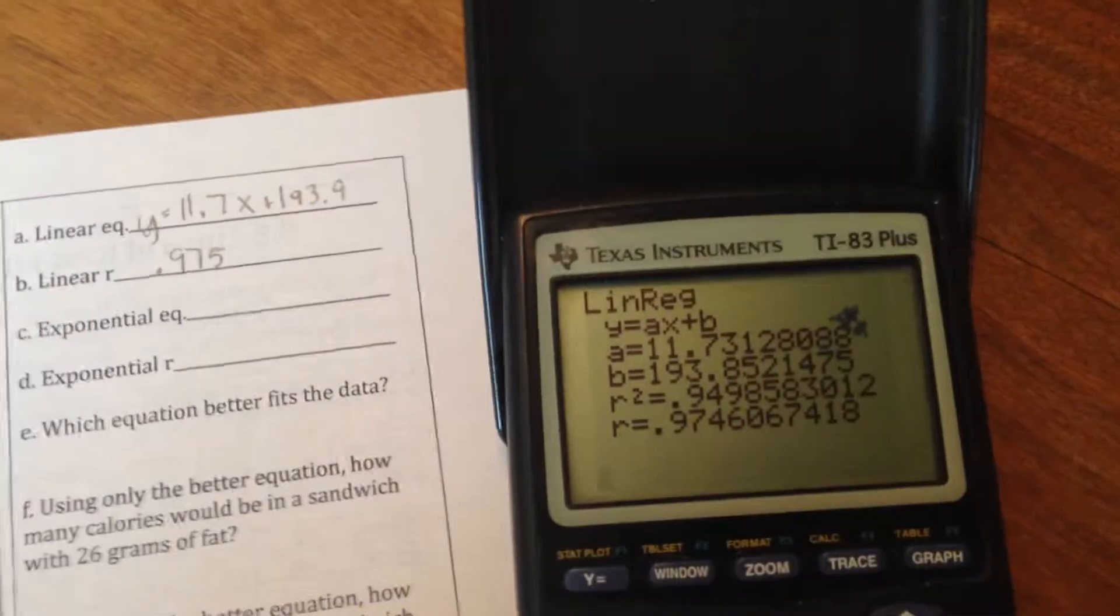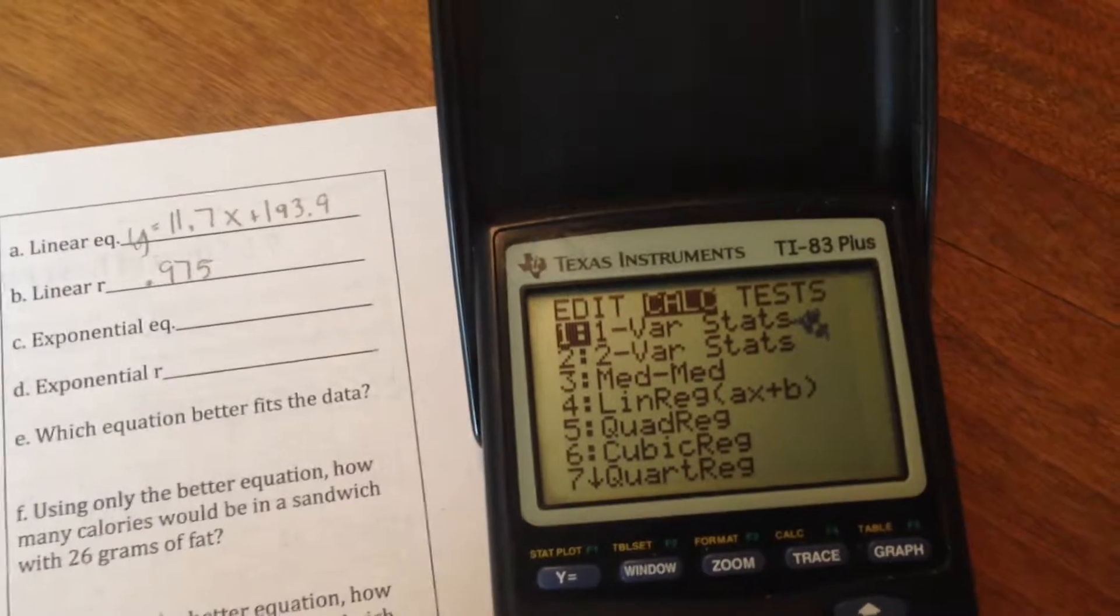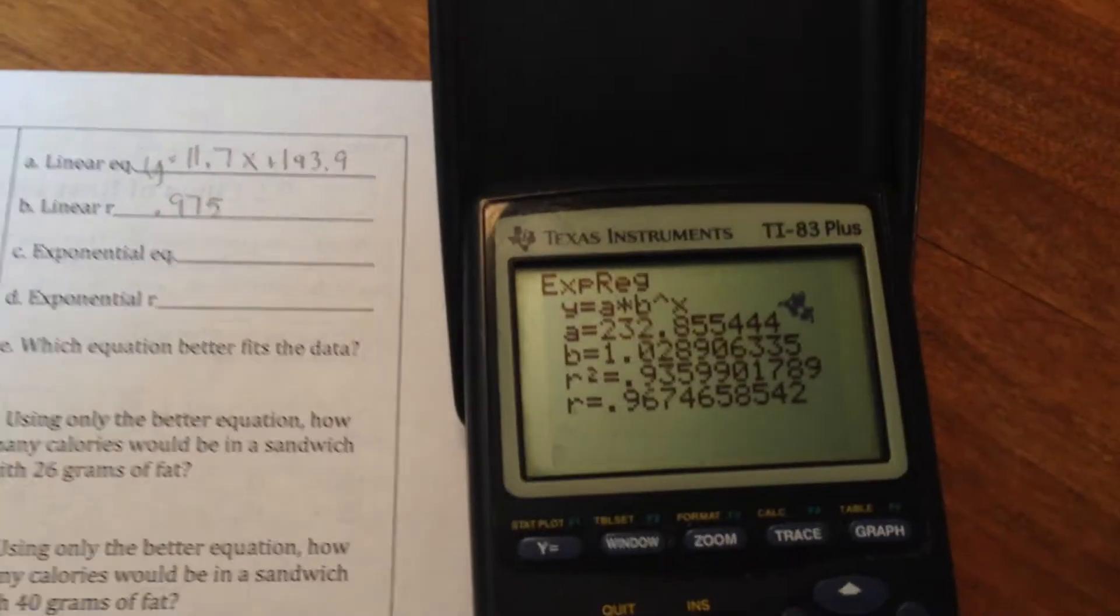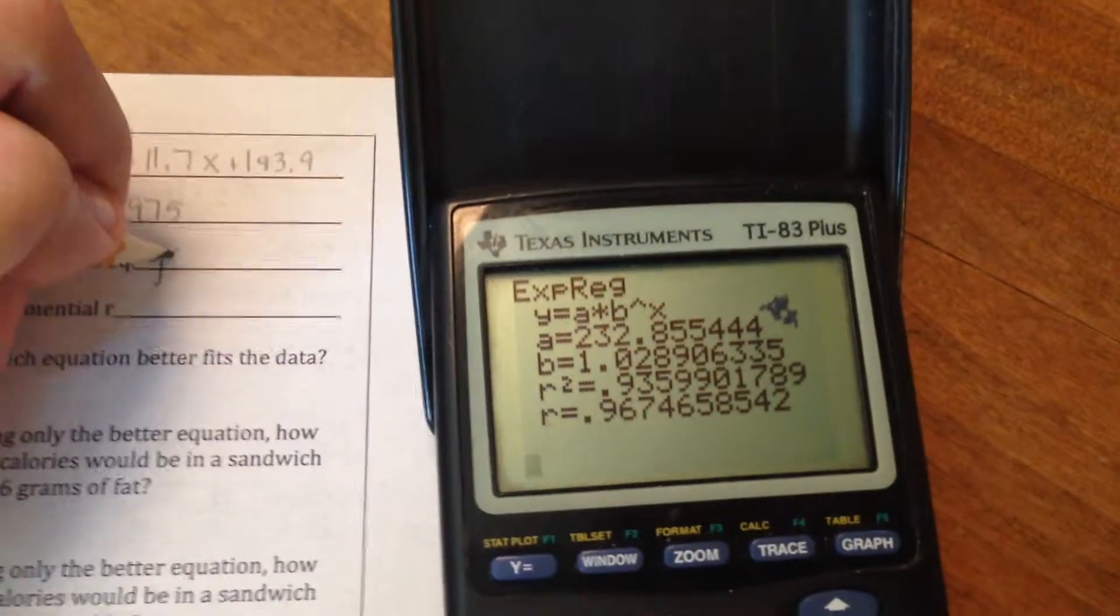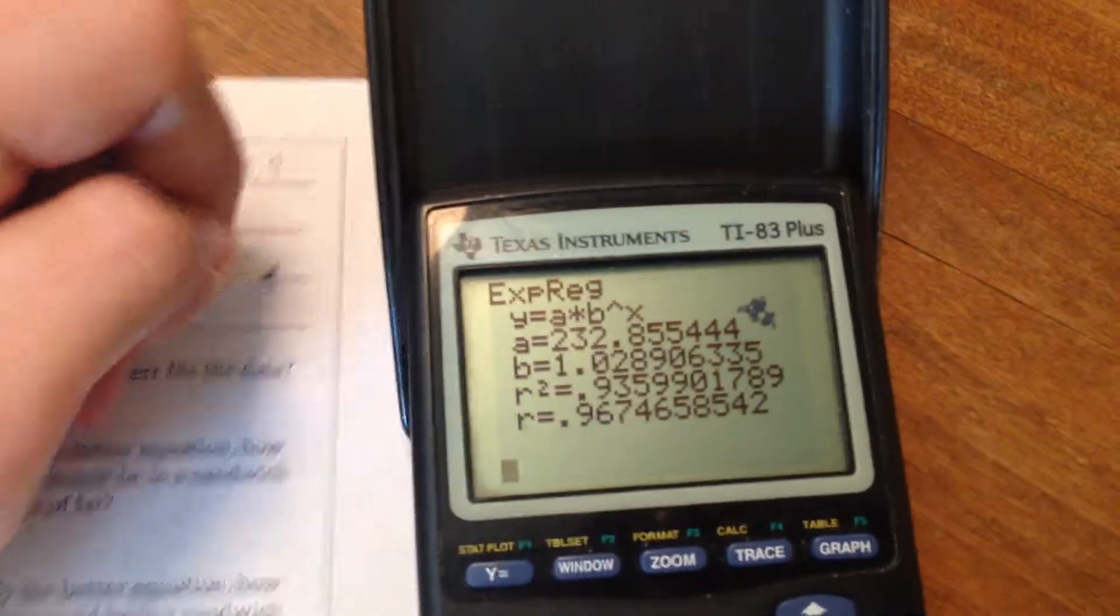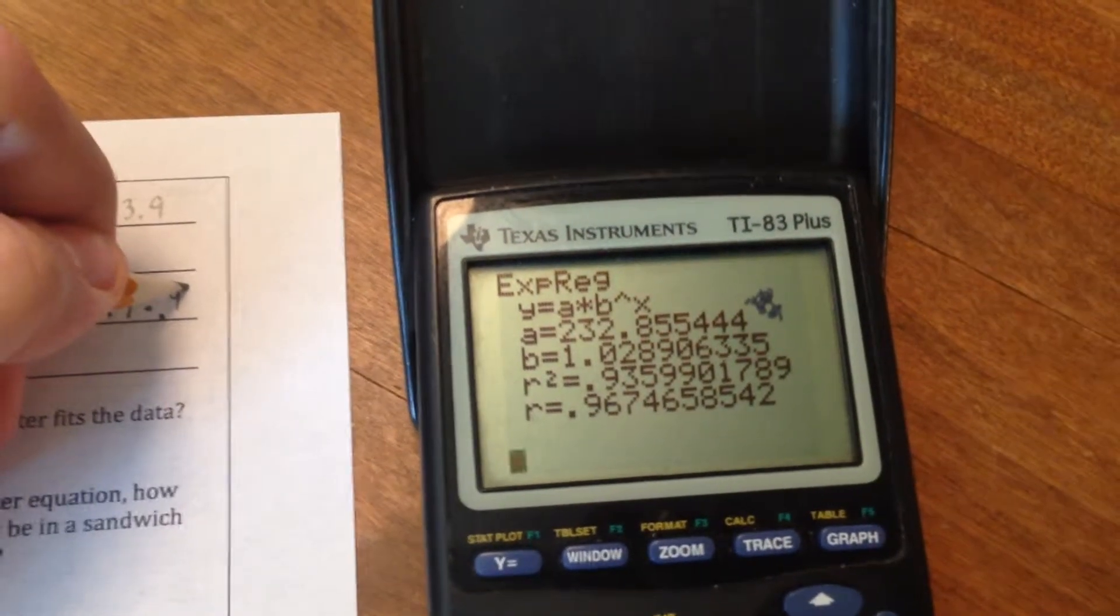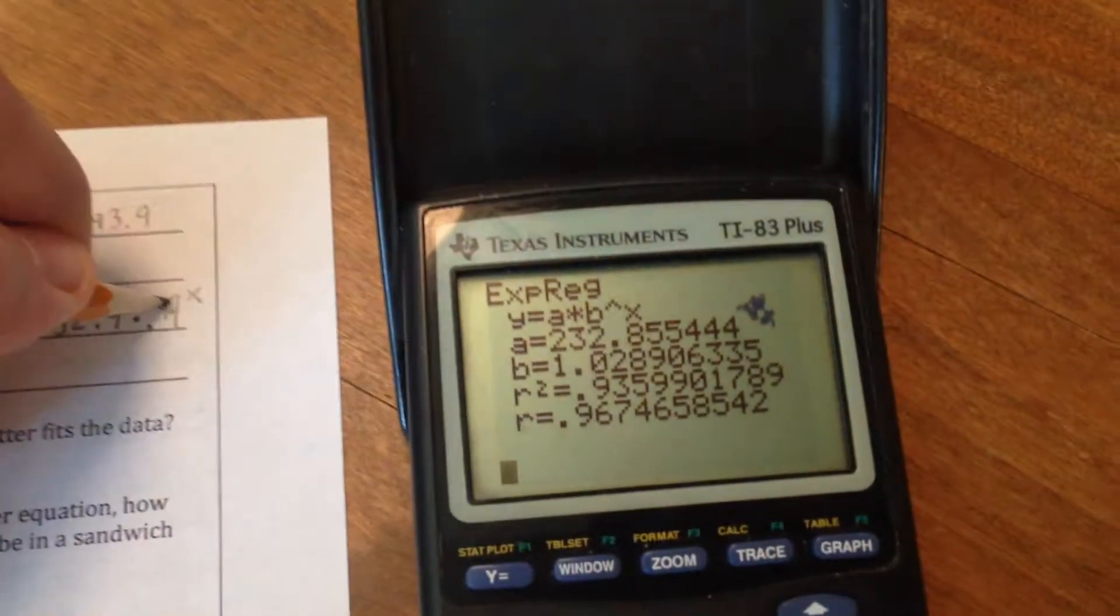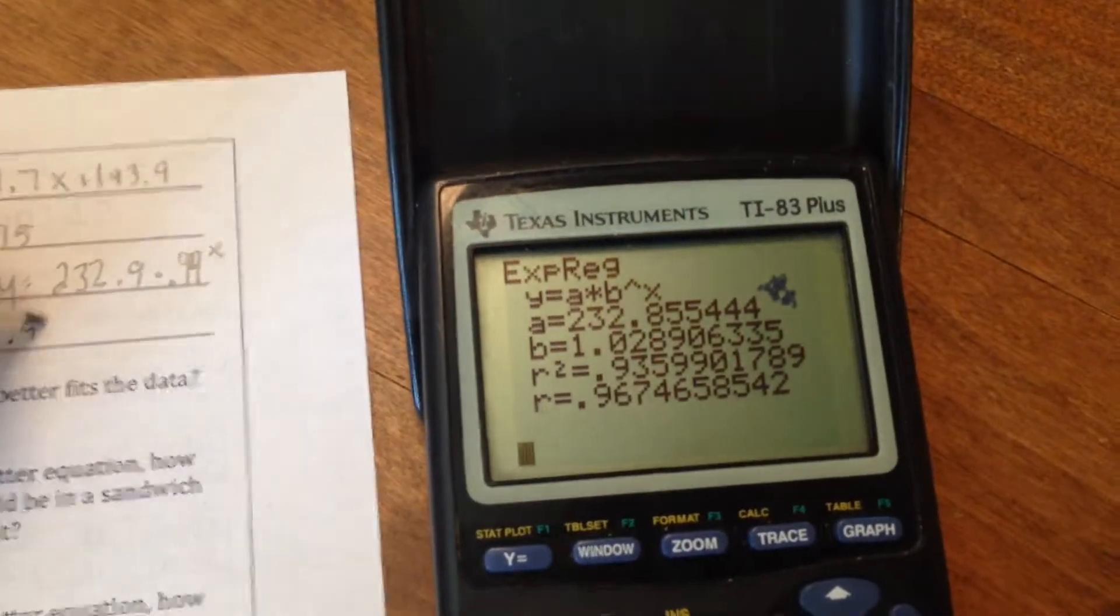And now we're going to look for exponential equations. So clear that out. Stat, calculate, and it was option 0. So I'm just going to type 0, push enter. So again, there's our equation. It's going to look like A times B to the X power. So Y equals A is 232.9 times, let's see, to avoid the problems from last time, we'll do 1.04 to the X power. And this exponential number is 0.964.